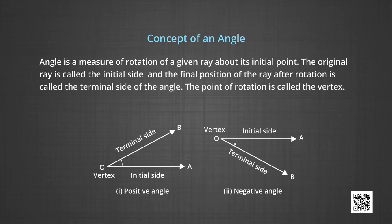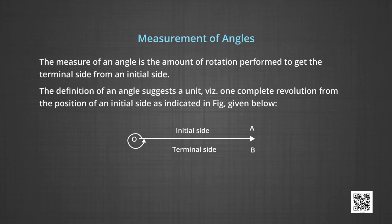Let us understand the concept of an angle. An angle is the measure of rotation of a given ray about its initial point. The original ray is called the initial side and the final position of the ray after rotation is called the terminal side of the angle. The point of rotation is called the vertex. The measure of an angle is the amount of rotation performed to get the terminal side from the initial side. The definition of an angle suggests a unit which could be one complete revolution from the position of the initial side to the terminal side.